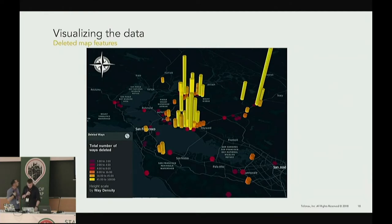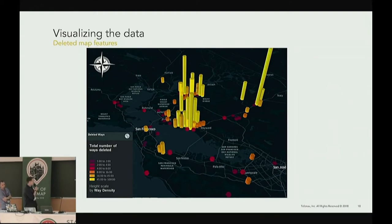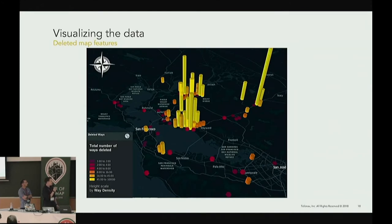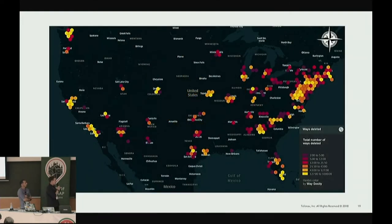Now that you know how we generate the data, let's look at some maps. This is the data from deleted road geometry for the San Francisco Bay Area, showing differences between June 2018 and July 2018. The higher the column, the greater the density of deleted ways — you can see in the Oakland area there are a lot of deleted roads. We applied the same analysis at the US level, mostly on the top 60 metro areas. The east coast has the most removed ways in this relatively short period of time.